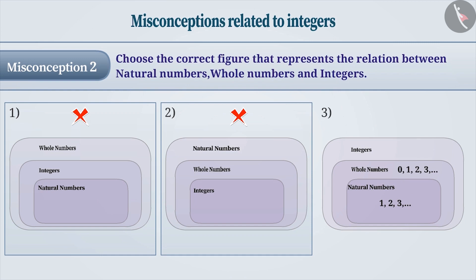This means natural numbers are included in the collection of whole numbers. Similarly, including negative numbers along with whole numbers gives the collection of integers. This means the collection of integers contains all whole numbers and all natural numbers.